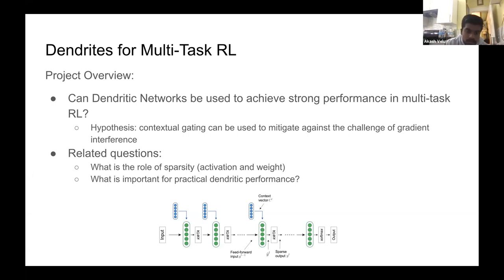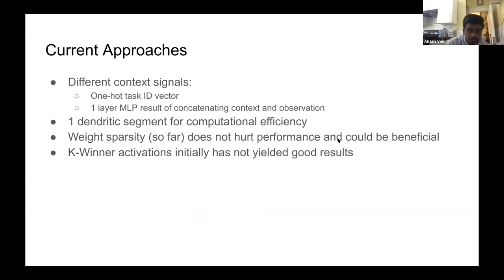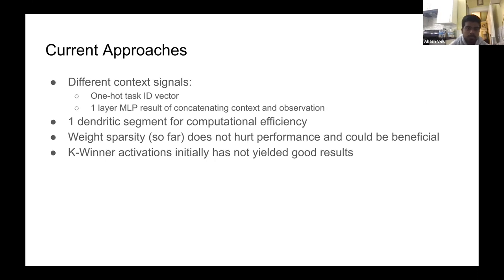Several related questions are: what's the role of sparsity — both activation and weight sparsity — and what's important for practical dendritic performance? Current approaches I've been working on involve several different context signals. The first is a one-hot task ID vector: if there are 10 tasks and you're solving task one, the zero-th index of a 10-dimensional vector is set to one and the rest are zero. Another approach is processing the task ID and observation at any given time and summarizing that into one vector to use as context.